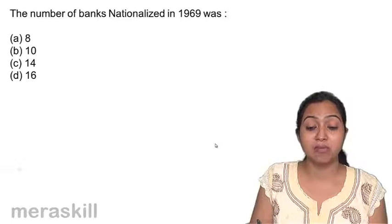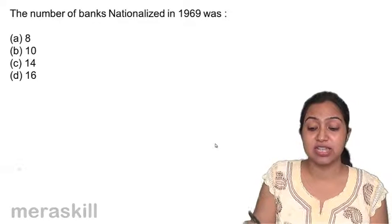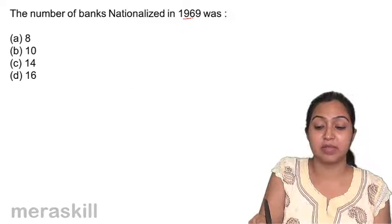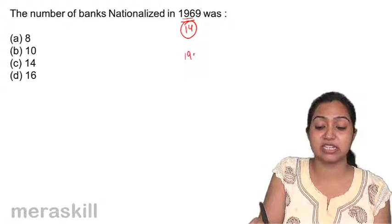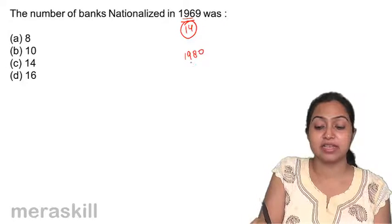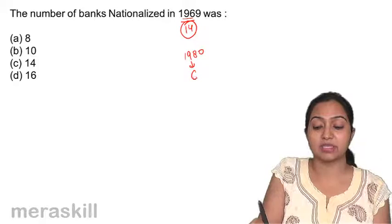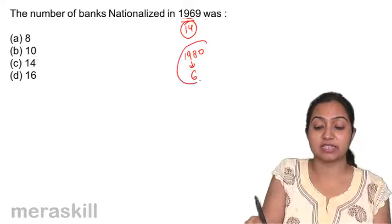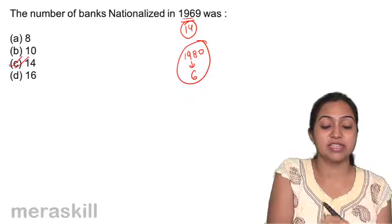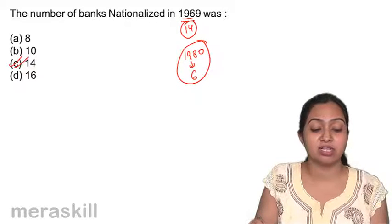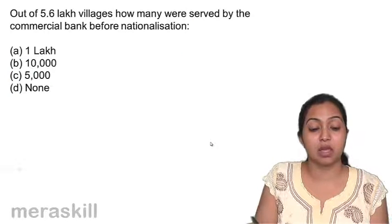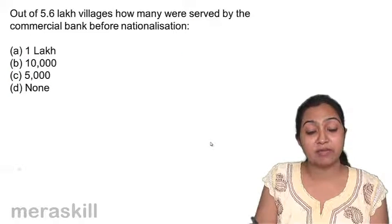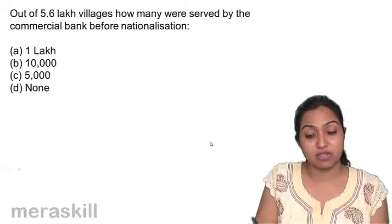The number of banks nationalized in 1969. In 1969, 14 banks were nationalized. In 1980, 6 more banks were nationalized. So in 1969, they are asking, 14 banks were nationalized.